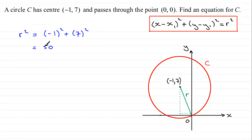Now there's no need really to square root this because we just need the radius squared. So we're in a position then to give the equation of the circle.